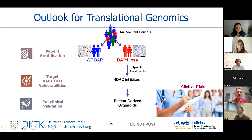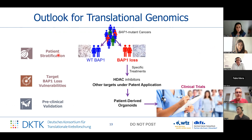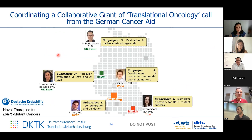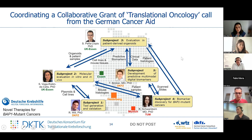We are also using patient-derived organoids as a preclinical model for entering clinical trials. We have other targets on a patent application that we will file next month and cannot disclose now. Additionally, I am coordinating a project with partner sites in Germany where we are evaluating hypotheses for targeting BAP1-mutant cancers, including cholangiocarcinoma, and sharing reagents and data.